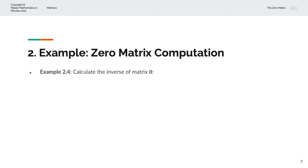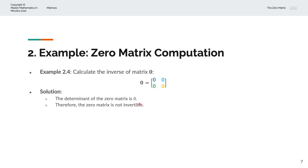In the fourth example, we're asked to calculate the inverse of the zero matrix. Since the determinant of the zero matrix is 0, we're unable to find the inverse of the zero matrix.